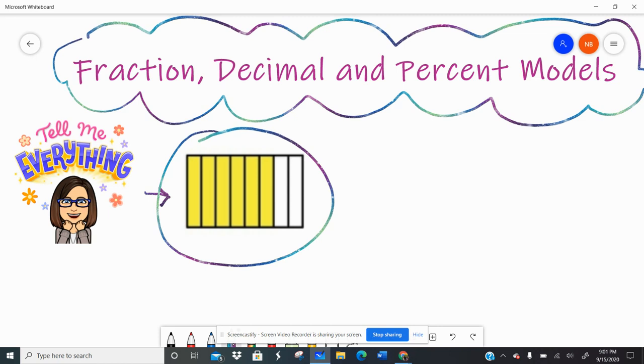I have 1, 2, 3, 4, 5, 6, 7, 8. And 1, 2, 3, 4, 5, 6 are shaded. So if I was calculating the fraction, decimal, and percent of the shaded picture, then I could write 6 eighths. That is the fraction.